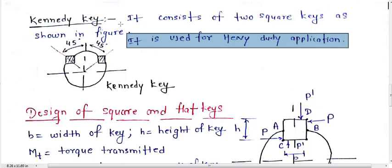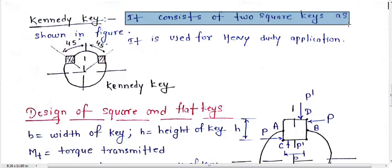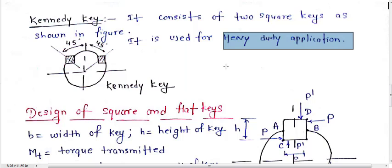This is the Kennedy key which is basically used for heavy duty application. It consists of two square keys as shown in the figure which is placed 45 degrees apart from this axis.